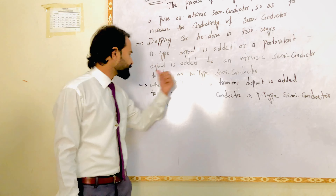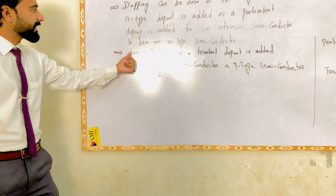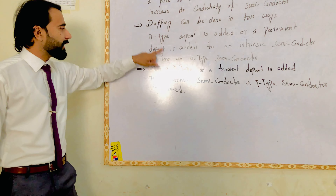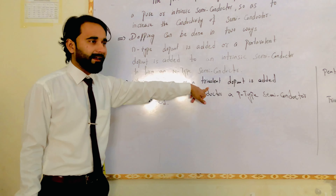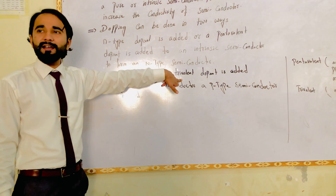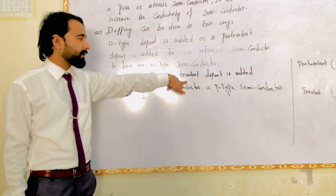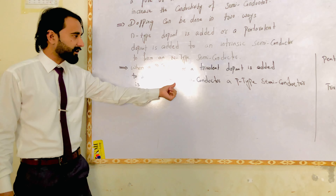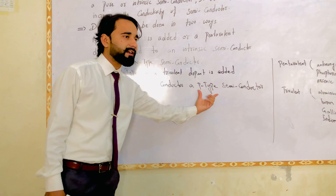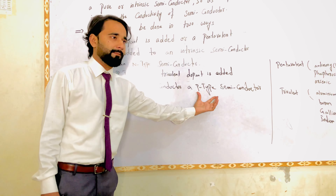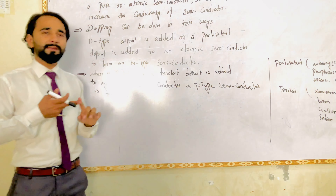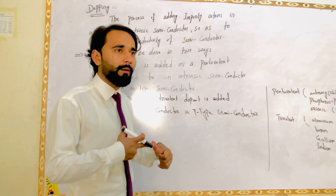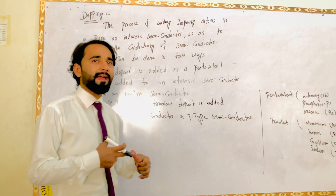The N-type semiconductor uses pentavalent dopants. The second type is P-type. P-type and trivalent are the same — trivalent impurity is added for P-type. So, you have two types: intrinsic and extrinsic. Intrinsic is the pure form and extrinsic is the impure form.